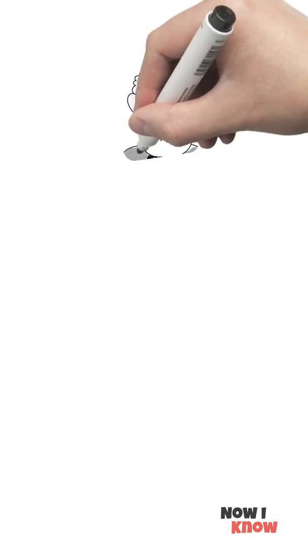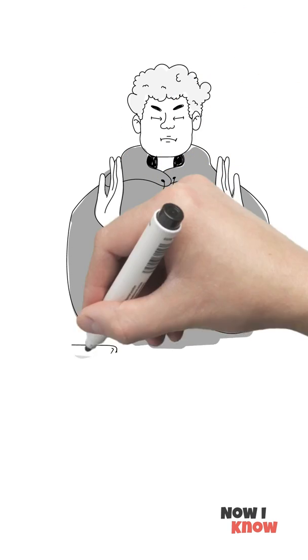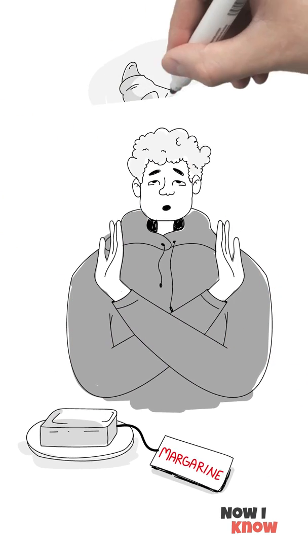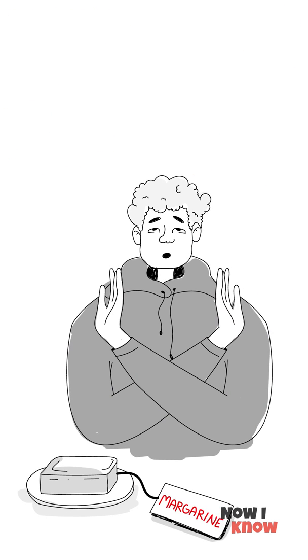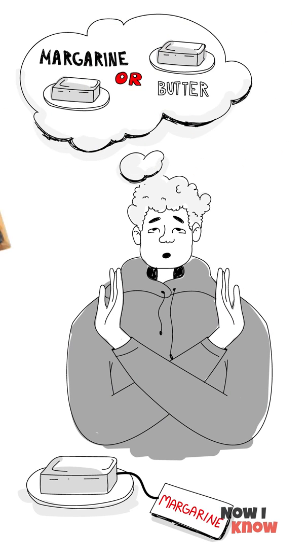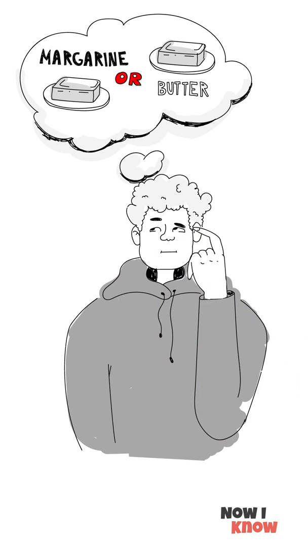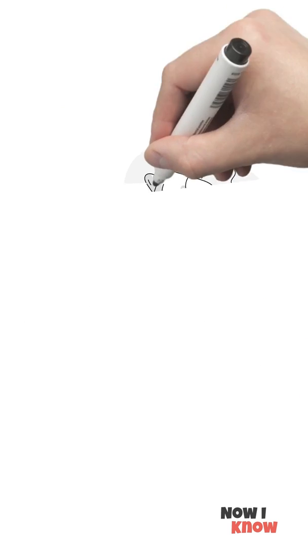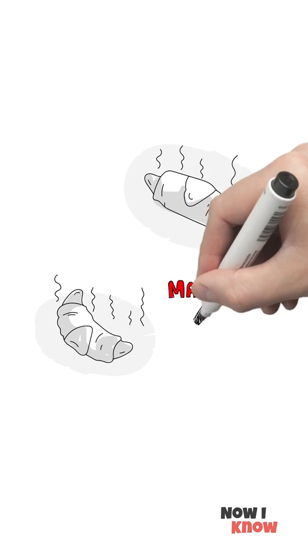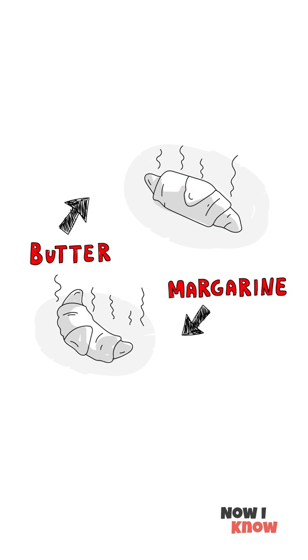If you say you're a firm no to margarine and pick butter every time, remember that croissants can be made using both of these products. In France, they make it easier to understand which is made from which. Croissants made with butter are fashioned in a straight shape, while those with margarine are made curved.